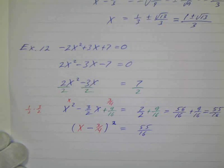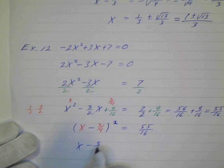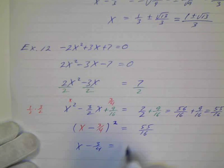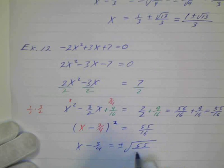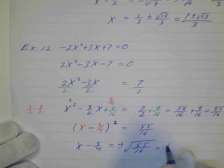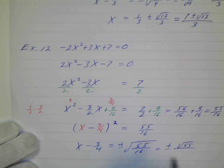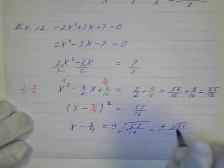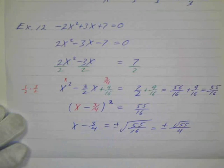And then I know that if x minus 3 fourths squared equals 55 over 16, I know that x minus 3 fourths equals plus or minus the square root of 55 over 16, which equals plus or minus the square root of 55 all over the square root of 16. And what's the square root of 16? That's just 4. And now I can add 3 fourths to both sides.